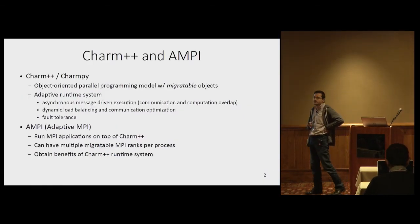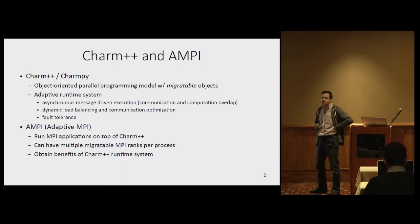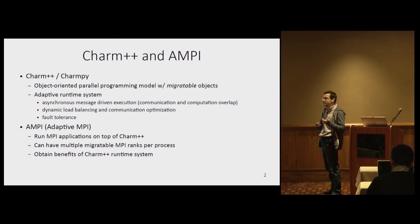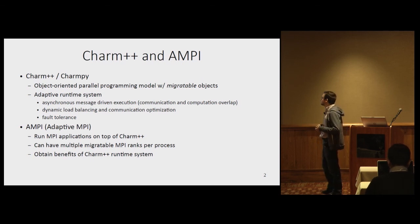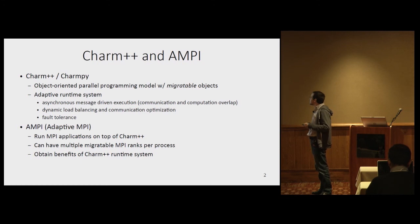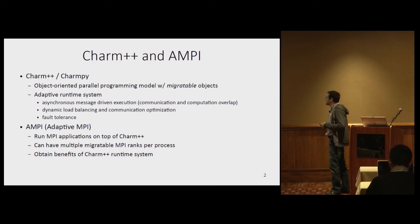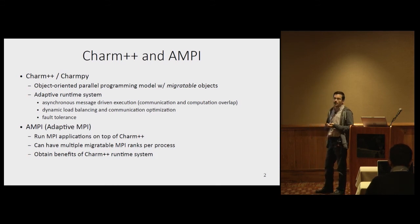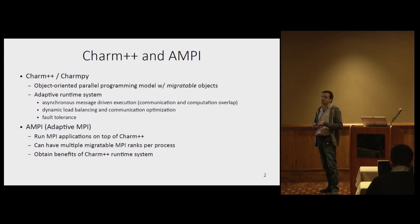Some context in case people are not familiar with Charm++ or AMPI. Charm++ is an object-oriented programming model based on migratable objects, where you express the program in terms of objects and the interactions between them. These objects can also migrate between cores and nodes, handled by the runtime. One very important component is the adaptive runtime system, which has features like asynchronous message-driven execution, allowing automatic overlap of communication and computation, dynamic load balancing, optimization of communication, and fault tolerance, among other features.